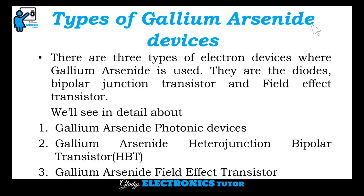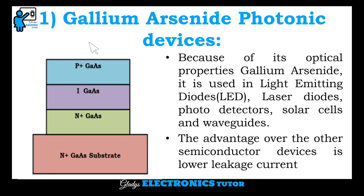Next are the types of gallium arsenide devices. There are three types of electron devices where gallium arsenide is used: diodes, bipolar junction transistors, and field effect transistors. We will see in detail about gallium arsenide photonic devices, gallium arsenide heterojunction bipolar transistors, and gallium arsenide field effect transistors. First is gallium arsenide photonic devices. Because of its optical properties, gallium arsenide is used in light emitting diodes, laser diodes, photodetectors, solar cells, and waveguides. The advantage over other semiconductor devices is lower leakage current. This is the structure of a PIN diode — here the P region, I region, and N region are made up of gallium arsenide instead of silicon. In the same way, it is used in LEDs and laser diodes also.